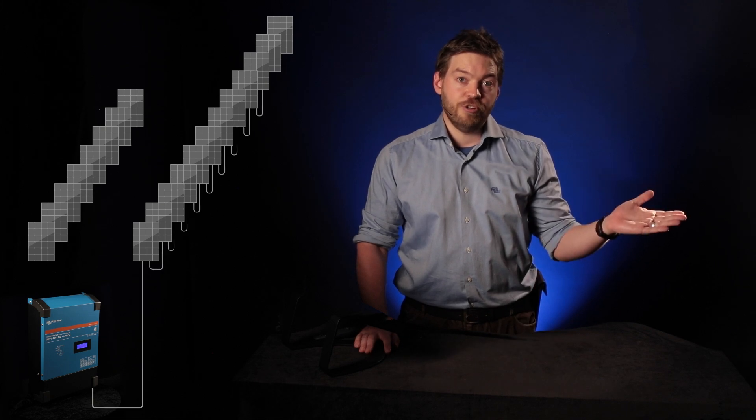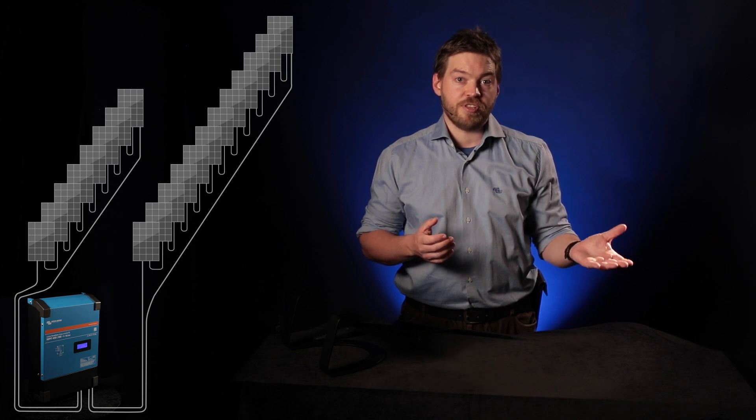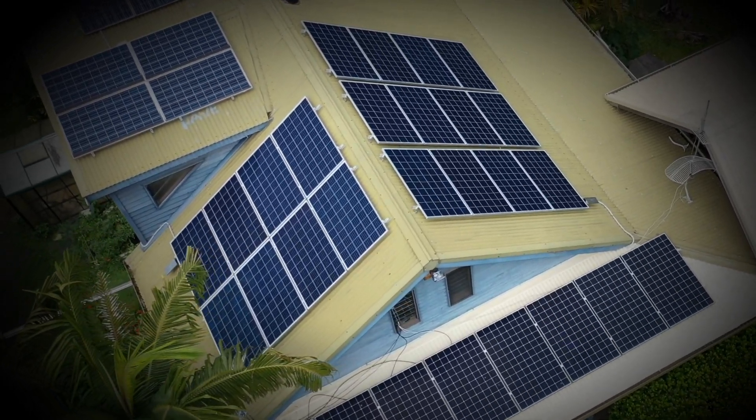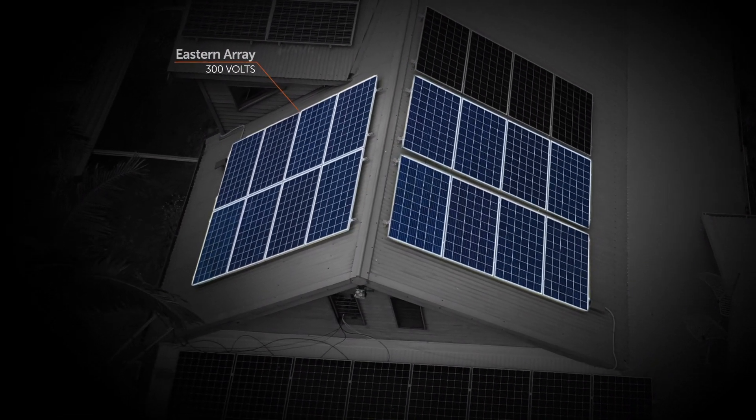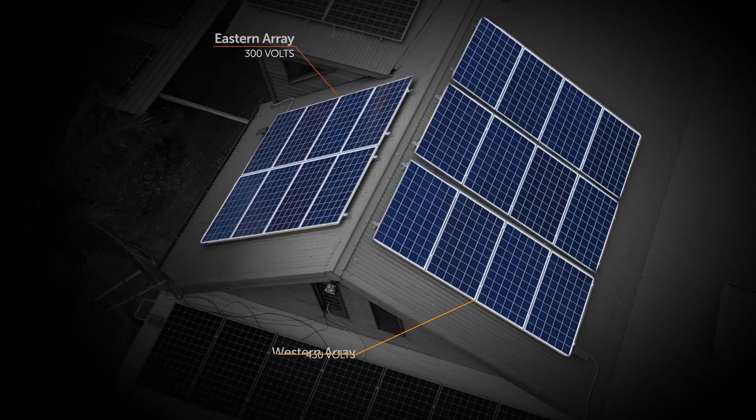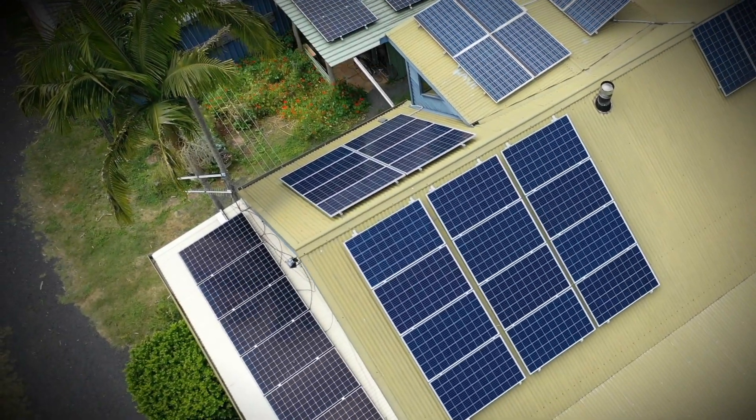Another big new feature of the MPPT RS is independent trackers. With these two separate inputs it means you can connect two different independent PV arrays. For example one on the east face of a roof and one on the west face of a roof. These can be strung up in different voltages as long as they both comply with the specifications. In our system example here we've got an eight panel array on one side operating at around 300 volts and a 12 panel array on the other side operating around 430 volts. This allows maximum output as we can capture morning light and afternoon light.